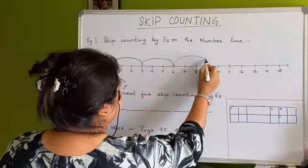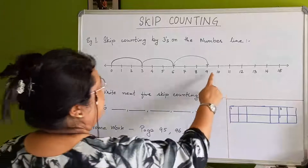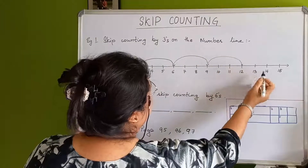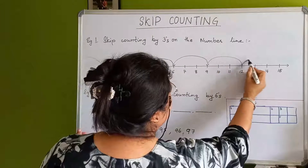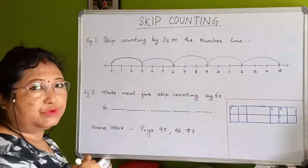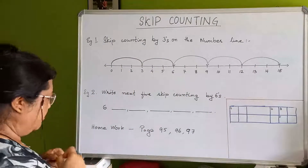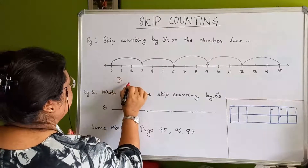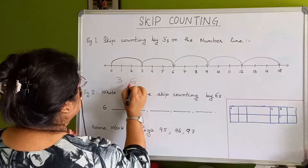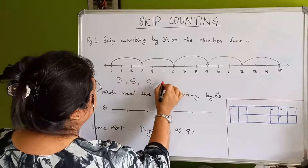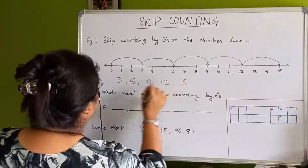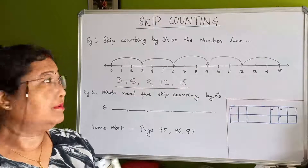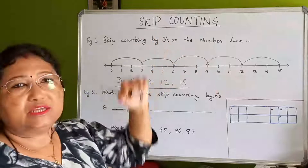Then again jump three: ten, eleven, twelve. Then again three: thirteen, fourteen, fifteen. So like this you do skip counting on the number line. The numbers you got are: three, six, nine, twelve, fifteen — that is skip counting by threes.